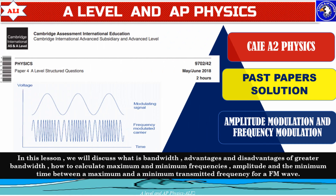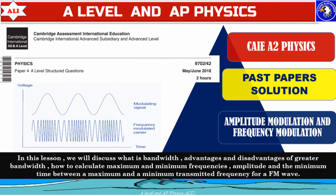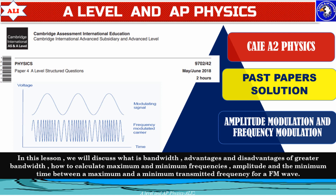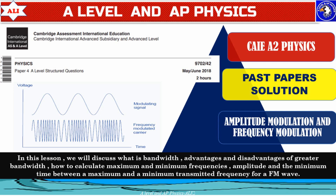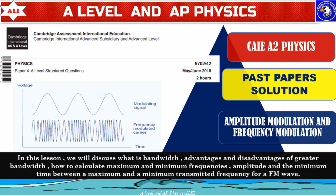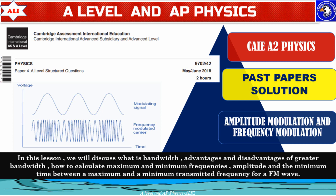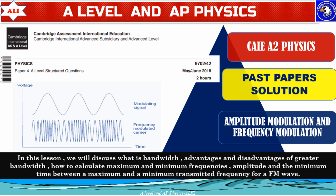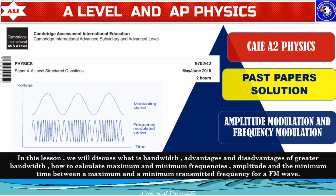Welcome to A-Level and AP Physics, a place where you can improve your understanding of physics with confidence. In today's class we will talk about communication systems from Cambridge A2 Physics. We will discuss what is bandwidth, advantages and disadvantages of greater bandwidth, and maximum and minimum frequencies and amplitude of a frequency modulated wave.